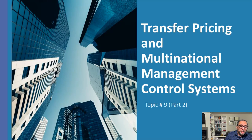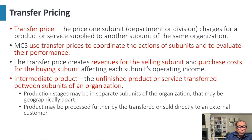The second part of this chapter is transfer pricing. The transfer price is the price one subunit or department charges for a product or service supplied to another subunit of the same organization. Management control systems use transfer prices to coordinate the actions of subunits and to evaluate their performances. The transfer price creates revenue for the selling subunit and a purchase cost for the buying subunit, affecting each subunit's operating income.